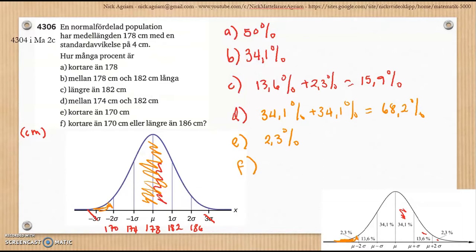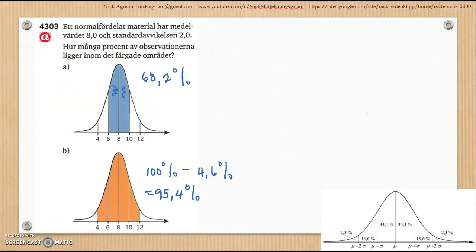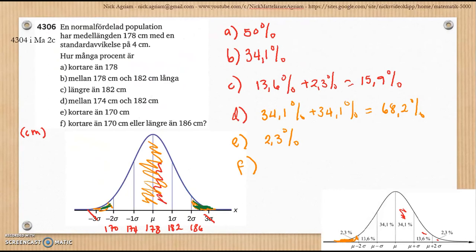F. Kortare än 180 cm eller längre än 186. Det vill säga båda. Båda är svansar där. Okej, jag kan ta en annan penna igen. Den här svansen och den här svansen — de pratar om. Så har vi 2,3%, och där är med 2,3%. För totalt: 4,6%.